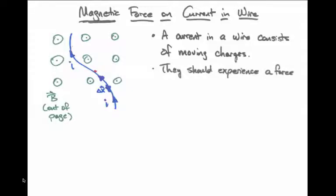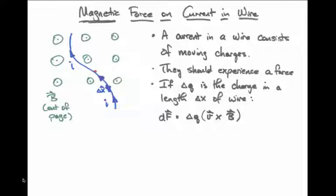The moving charges should experience a force, and if we imagine an element of charge, delta q, that's in a certain length of the wire, delta x, then the force on that little piece of charge, delta q, should be delta q times v cross b.